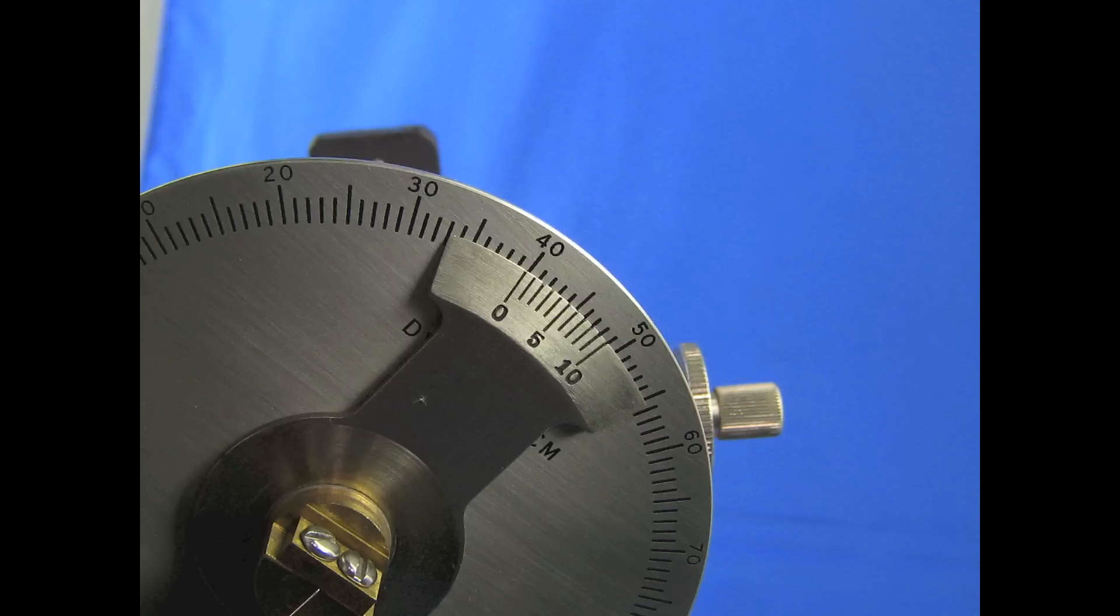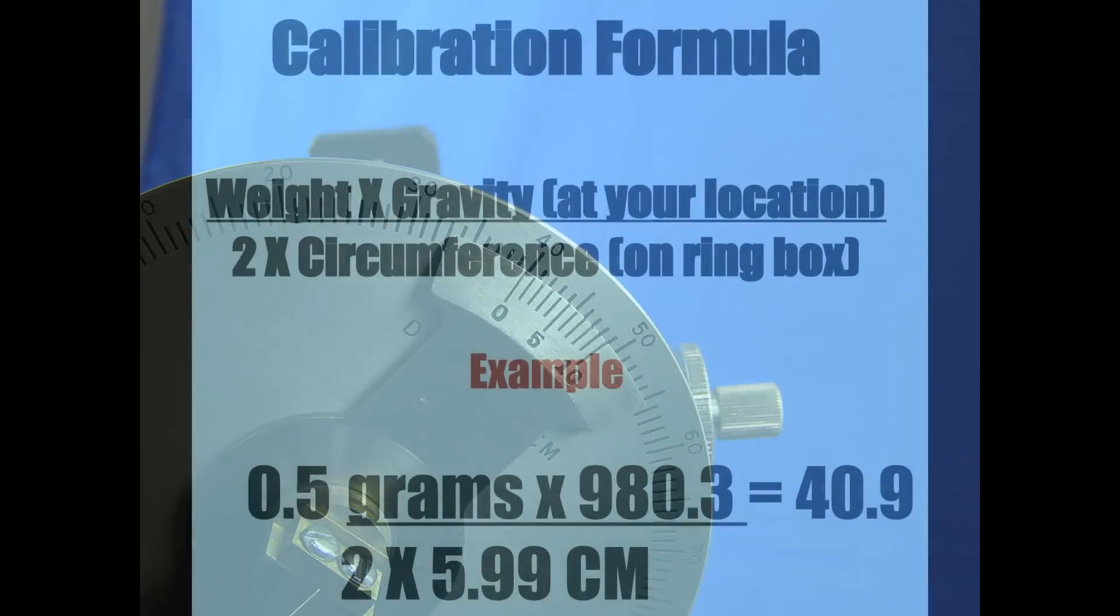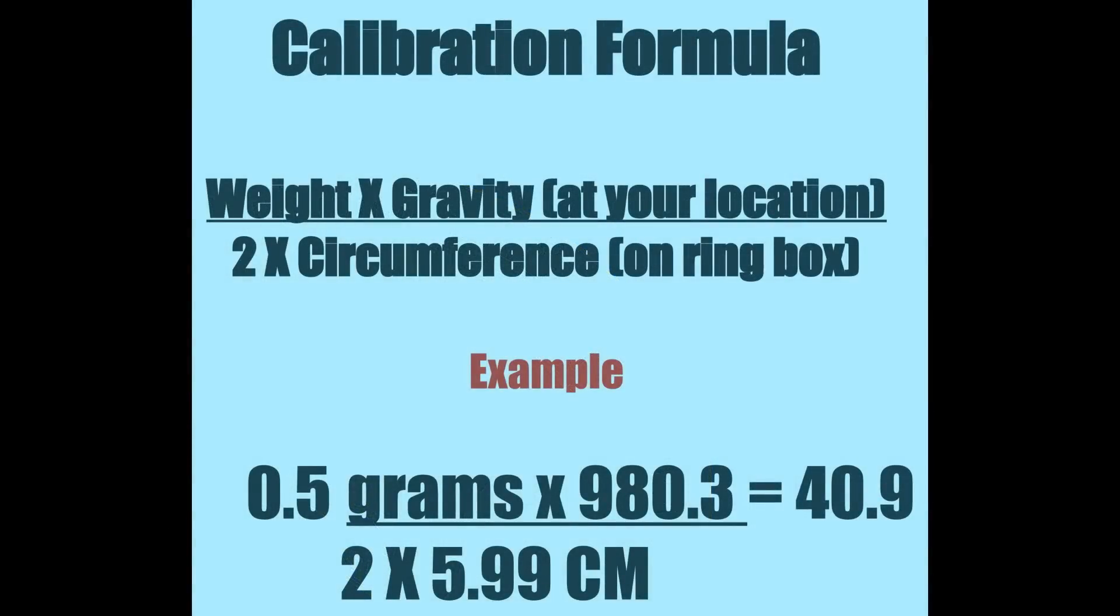Set up to calculate the calibration number. This is the weight put on the ring times the gravity at your location. You can get this from the National Geodetic Survey. This number is divided by two times the ring circumference.